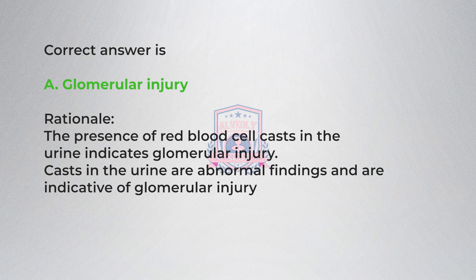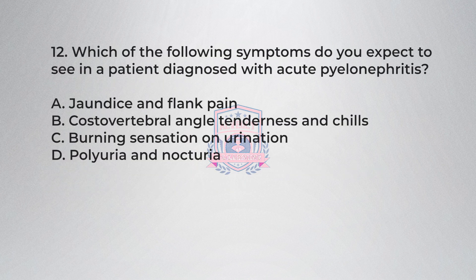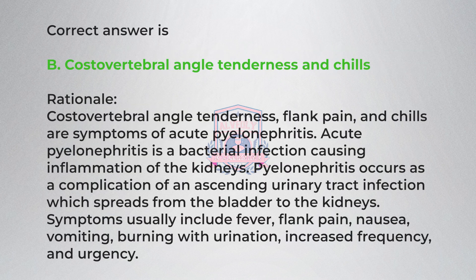Question 12: Which of the following symptoms do you expect to see in a patient diagnosed with acute pyelonephritis? A) Jaundice and flank pain, B) Costovertebral angle tenderness and chills, C) Burning sensation on urination, D) Polyuria and nocturia. Correct answer is B, costovertebral angle tenderness and chills.